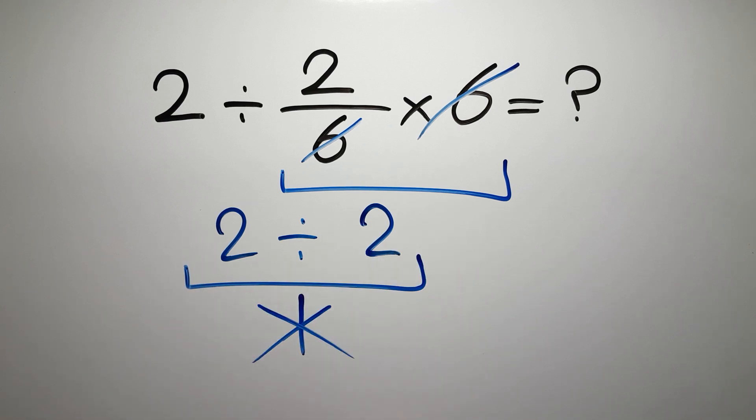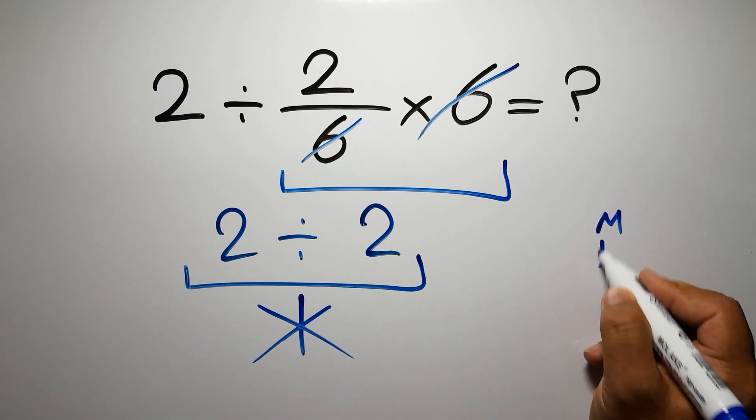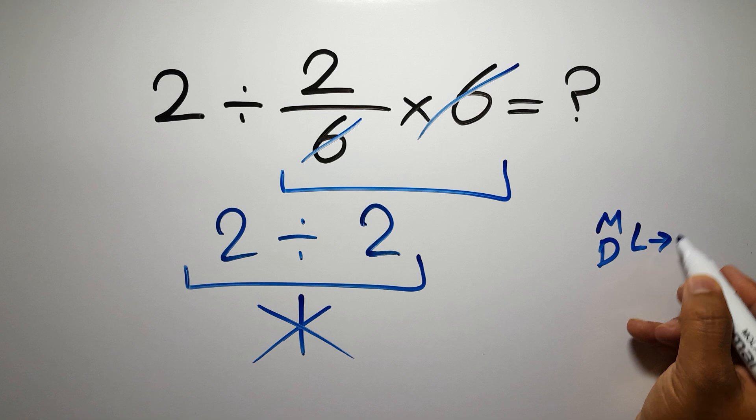But this answer is not correct. Because according to the order of operations, multiplication and division have equal priority and we have to work from left to right.